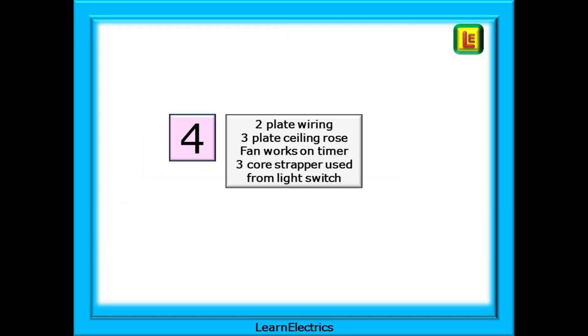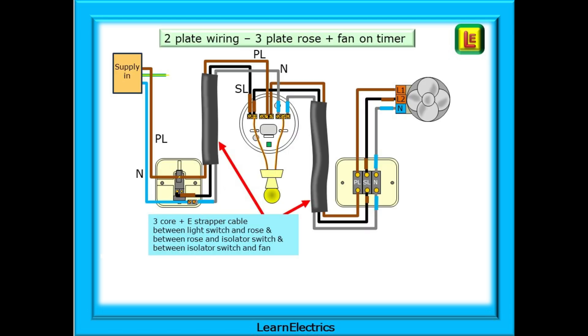Number four is all about two plate wiring and three plate ceiling rose but this time taking a permanent feed from the light switch itself. If it's possible to route a new cable from the light switch to the ceiling rose we can use this method. Here I've shown it as running a new three core strapper cable but it may also be an extra sheathed single to give us the three live conductors that we need. Whichever way we do it we now have a permanent line, a switched line and a neutral available to us to enable the fan and the timer to work.